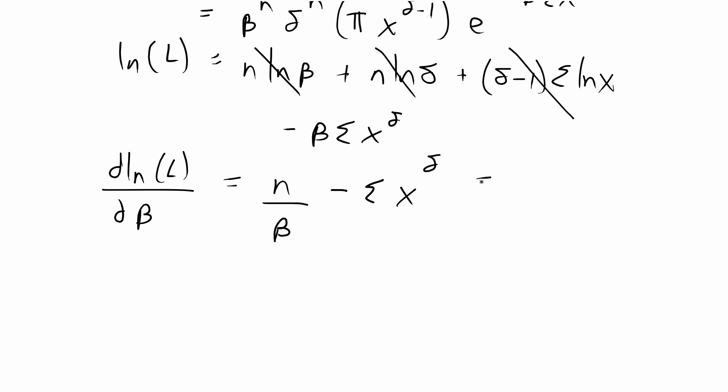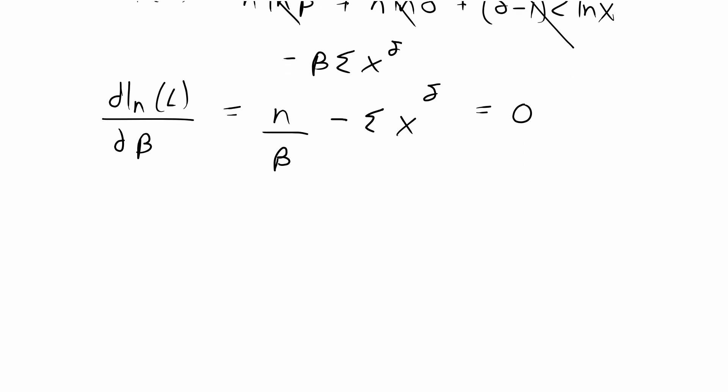So this is our beta hat estimate. This is equal to n over beta hat equal to this negative term which we're just bringing to the other side of the equal sign, so that's going to be equal to the sum of x to the delta.